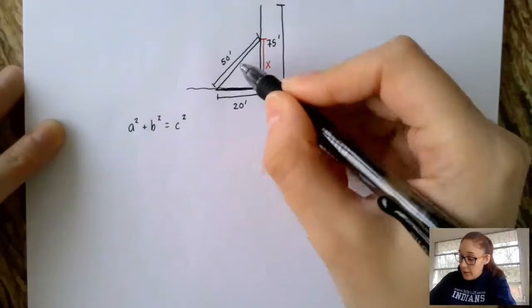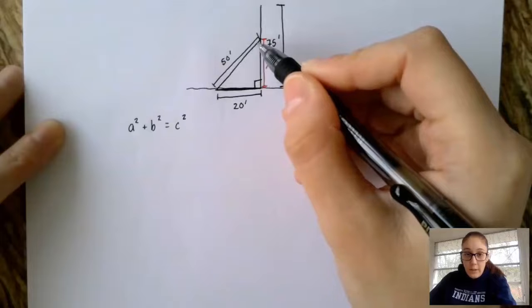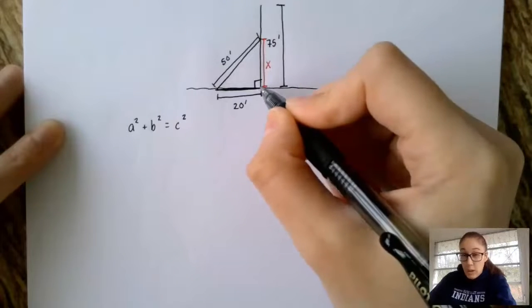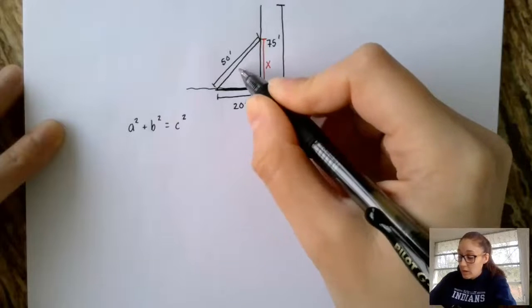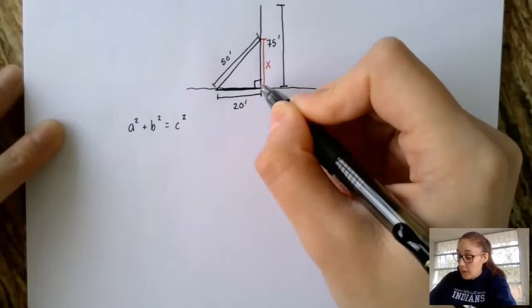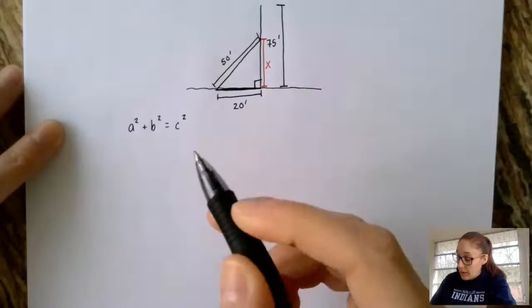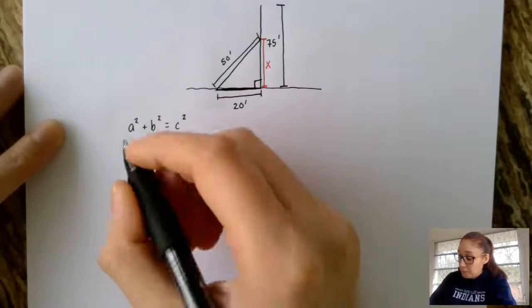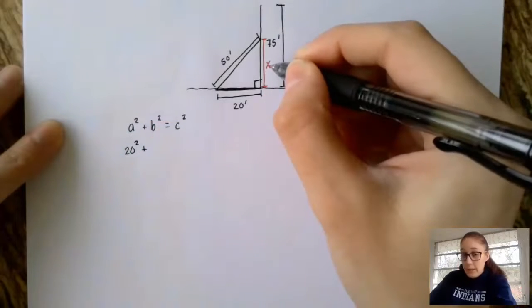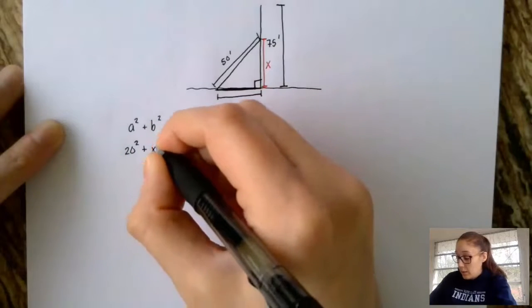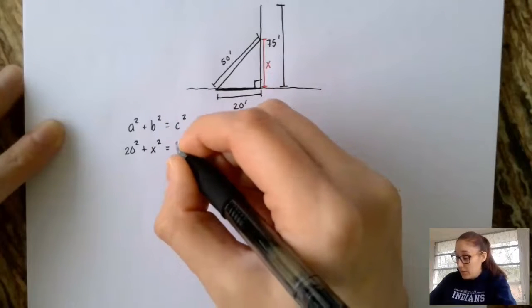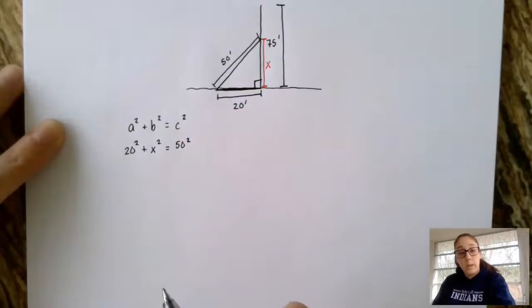C is the hypotenuse, and the hypotenuse you can easily identify because it's usually the slanted side, but it's also more specifically the side that's across the right angle. So that's how you know for sure what your hypotenuse is. So let's go ahead and plug in. I'm just going to say that a is 20, so we have 20². And my other side, my other leg, I don't know it, so I'm going to say x². And then my hypotenuse is 50, so we have 50².